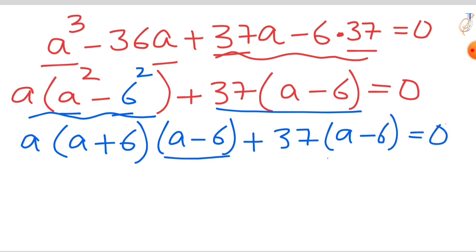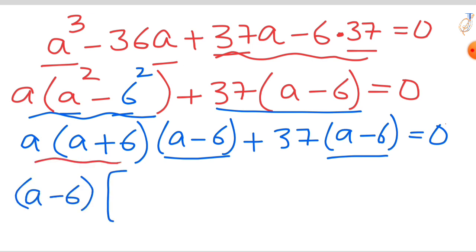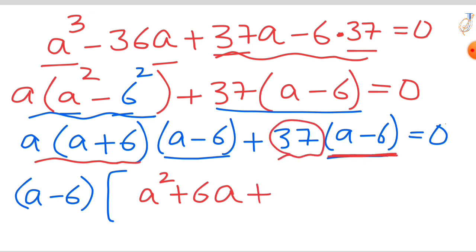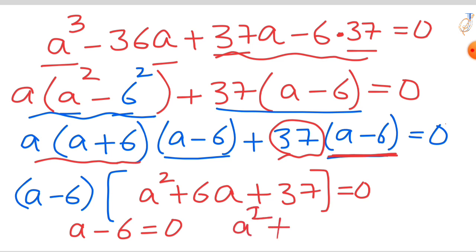Now we have (a minus 6) as a common factor. Taking it as common, we are left with a times (a plus 6), which is a squared plus 6a. Then taking (a minus 6) as common from the remaining term leaves 37. So this gives us two equations: a minus 6 equals 0, and a squared plus 6a plus 37 equals 0.